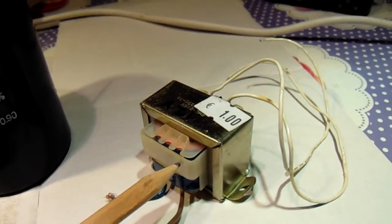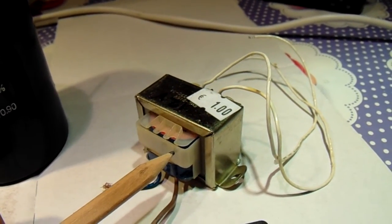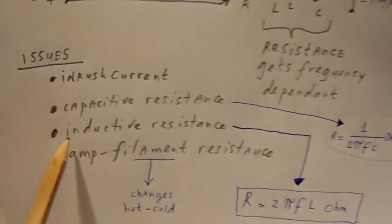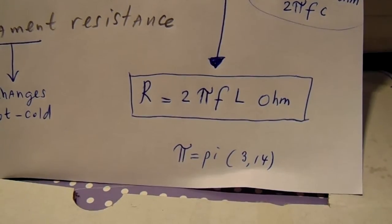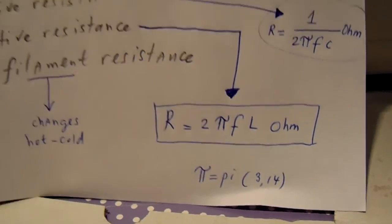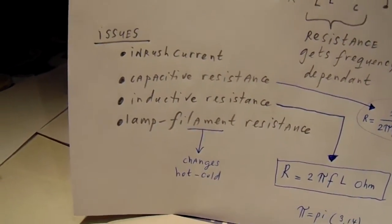A coil also has an AC resistance, but that AC resistance is also related to the frequency. That's the inductive resistance here, and this is the formula. And you can calculate it.